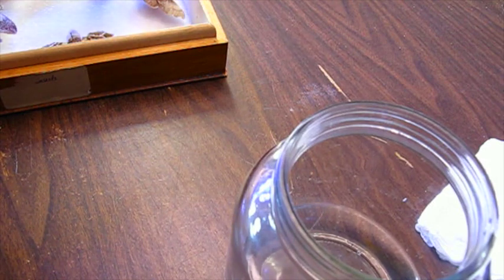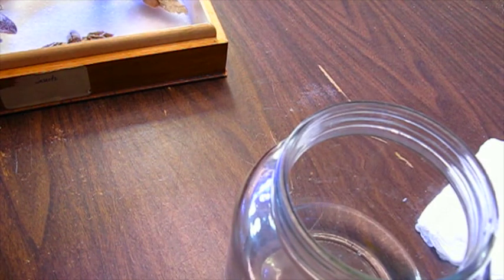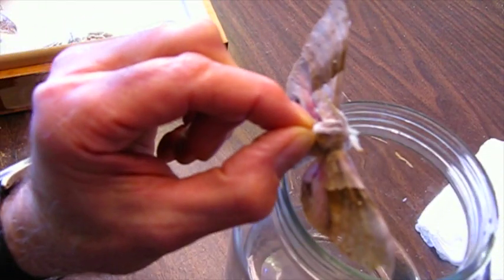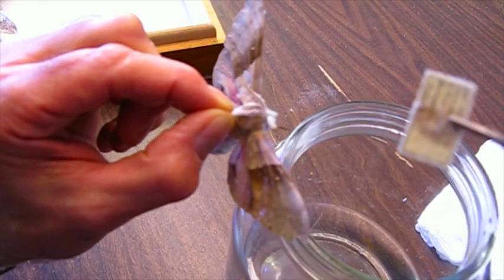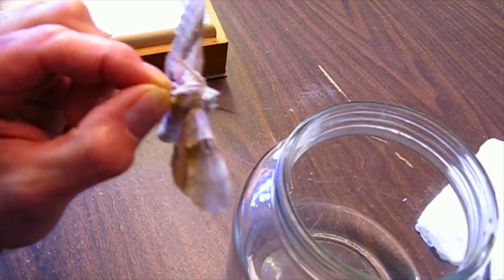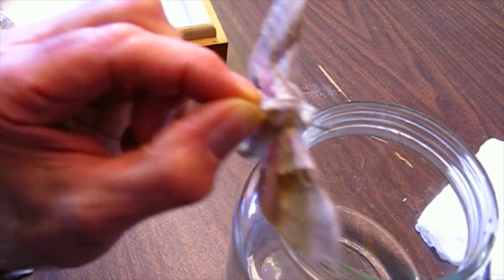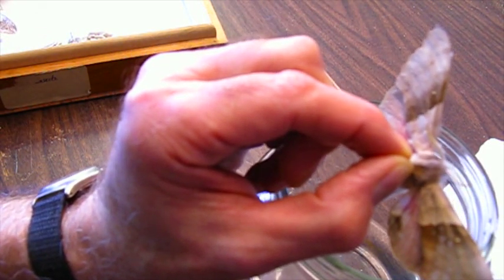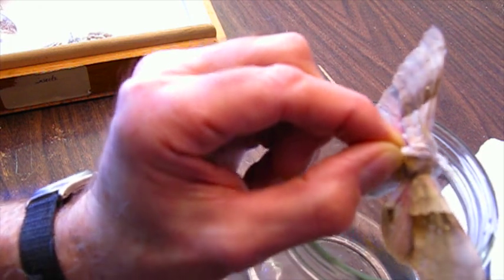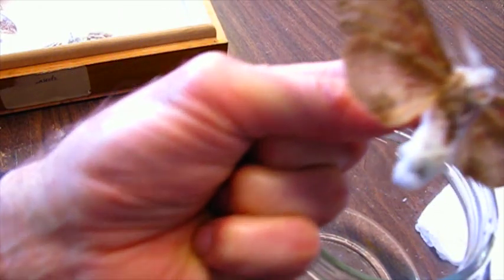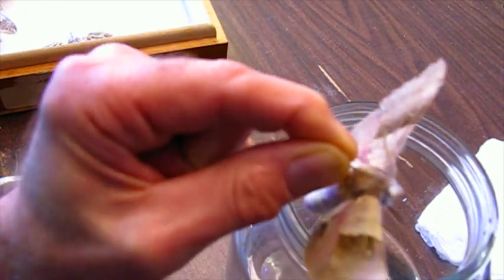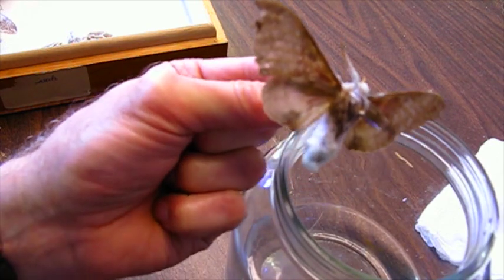Here I'll do one more. This one's really bad. You can't even read the label, it's all just covered with mold. This one is Pachysphinx modesta from Minnesota. Can't even read the date on it, it's so bad. Look how bad this mold is on there. This is severe. The antennas, everything is covered with mold.